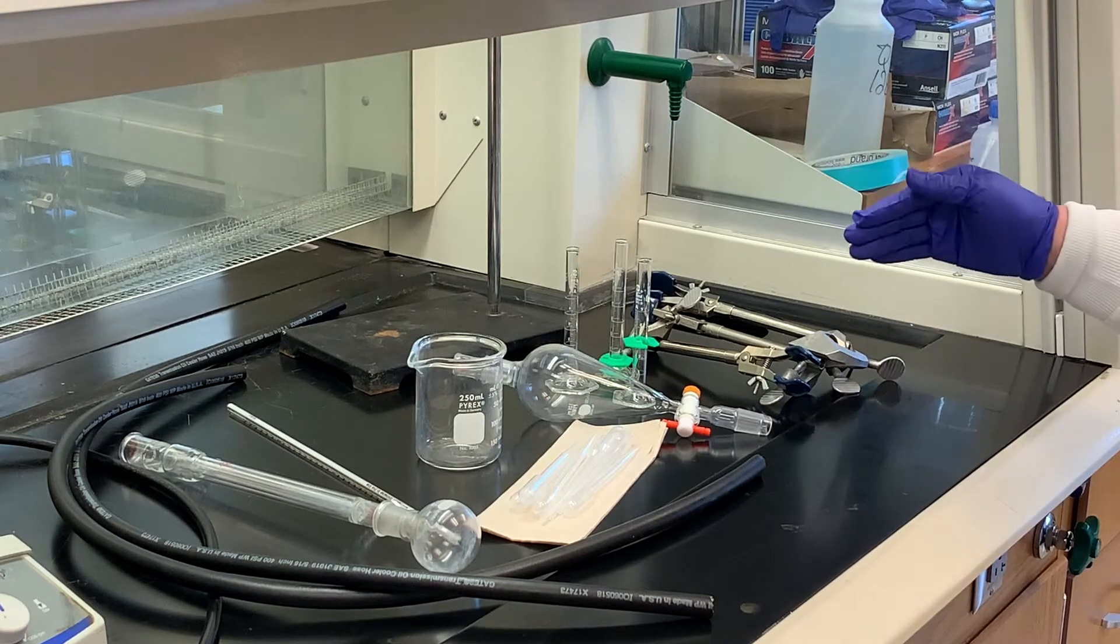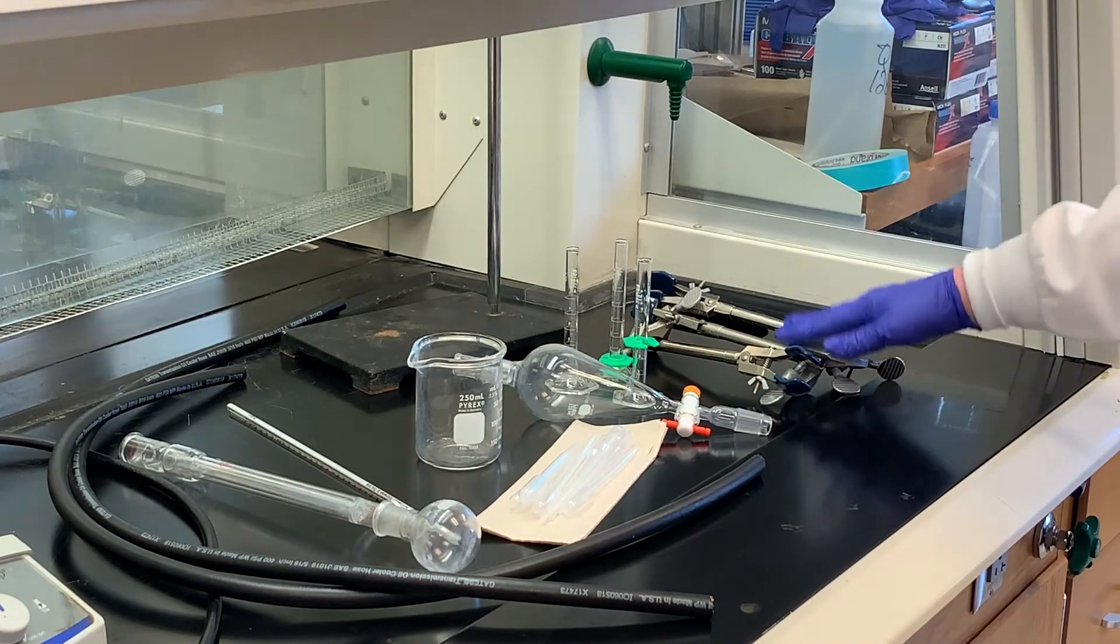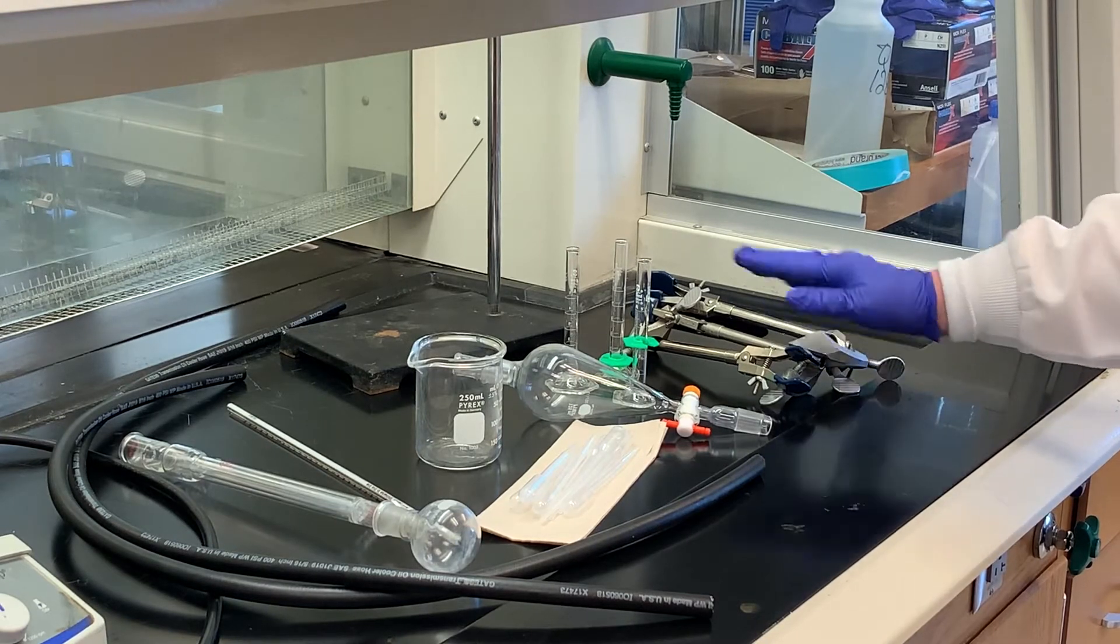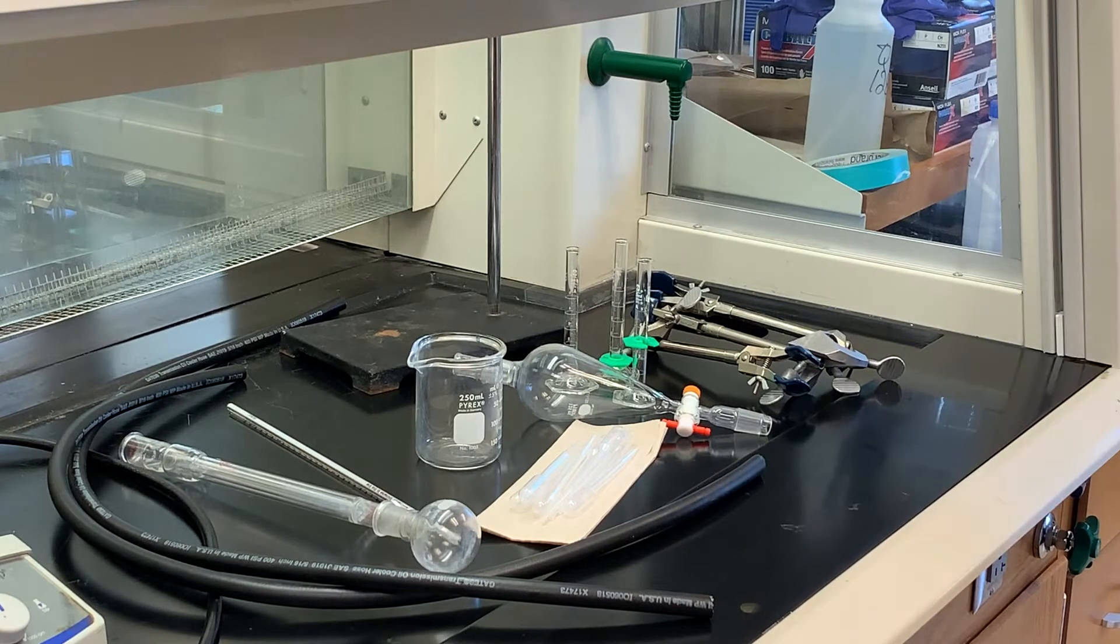Graduated cylinders—you need fairly small ones because the amounts we're using are not very great. Clamps to clamp the glassware in place, pipettes, and of course the water going in and out of these rubber tubes.